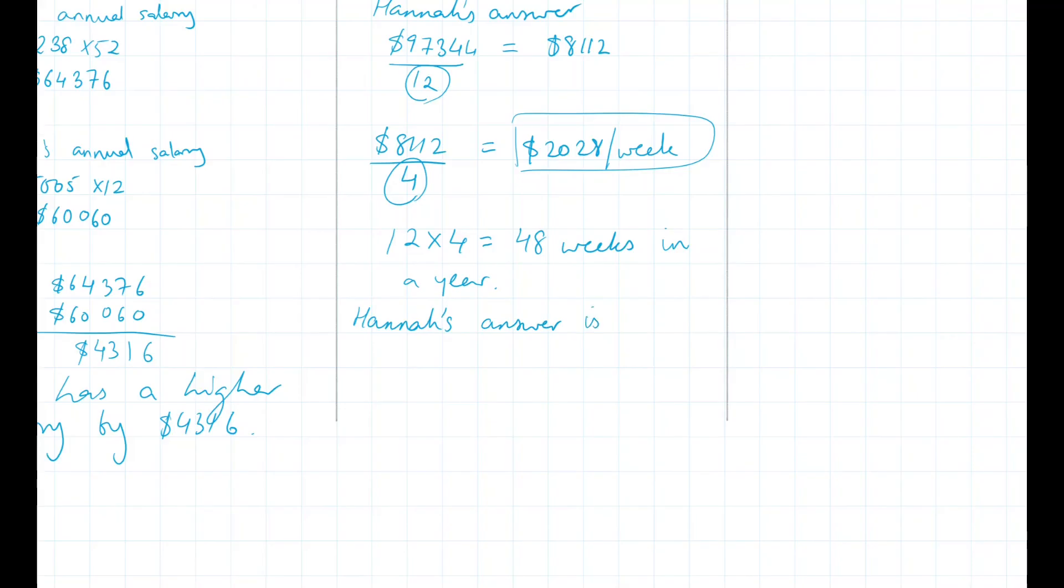So we can write that down. Hannah's answer is incorrect. Because her answer assumes there are 48 weeks in a year. When in reality, there are 52 weeks.